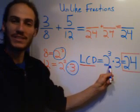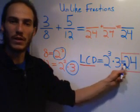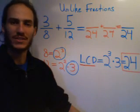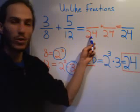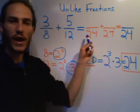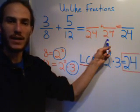Again, 2 cubed is 8 times 3 gets us to 24. Well, we're going to create equivalent fractions in order to add up those numerators. So we're going to put two new fractions, both with denominators of 24.